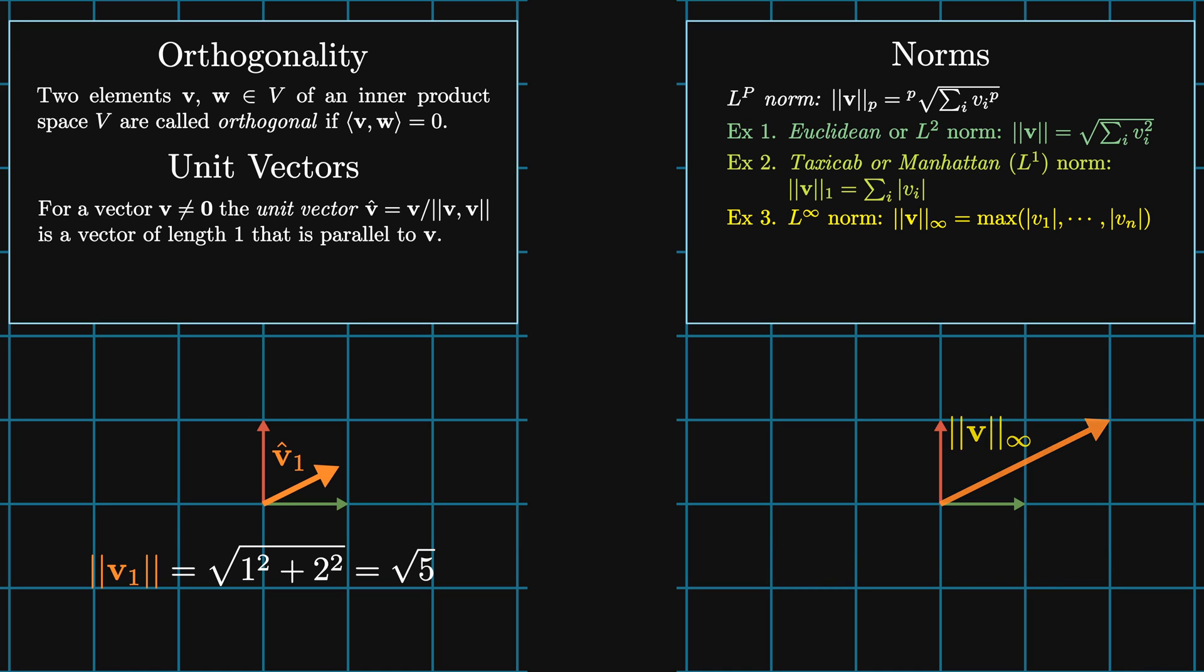Each norm has a unit sphere defined for it, which is the set of all vectors that have norm equal to one. Our Euclidean norm has a unit sphere that is just the unit circle. Any pair whose absolute values add to one forms the unit sphere for the L1 norm. This looks like a diamond with coordinates 1, 0, 0, 1, minus 1, 0, and 0, minus 1. The unit sphere for the L infinity norm also looks a bit curious. It is a square of side length 2 centered at the origin. See if you can convince yourself why this makes sense.